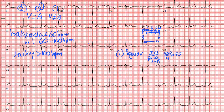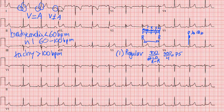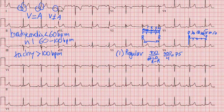A shortcut method is to pre-label the large boxes. You find an R that lands on a large box line, and then label each subsequent box: 300, 150, 100, 75, 60, 50. This is a generic labeling, not based on just this EKG. You look at the first R, find where the next R falls, and in this case the next R falls on 75 — consistent with our earlier calculation.